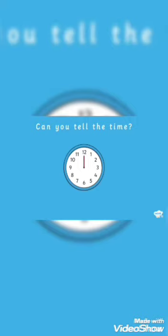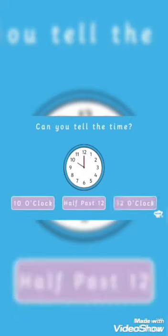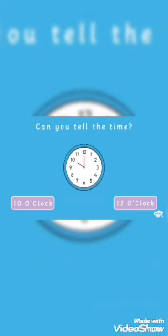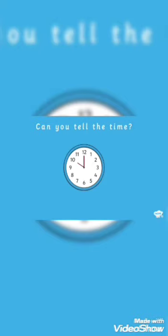What time is it now? Is it 10 o'clock, half past 12, or is it 12 o'clock? It's not half past 12. Hint: look at where the minute hand is pointing. It's 10 o'clock — the big hand is pointing at 12 so we say o'clock, and the small hand is pointing to 10, which means it's 10 o'clock.